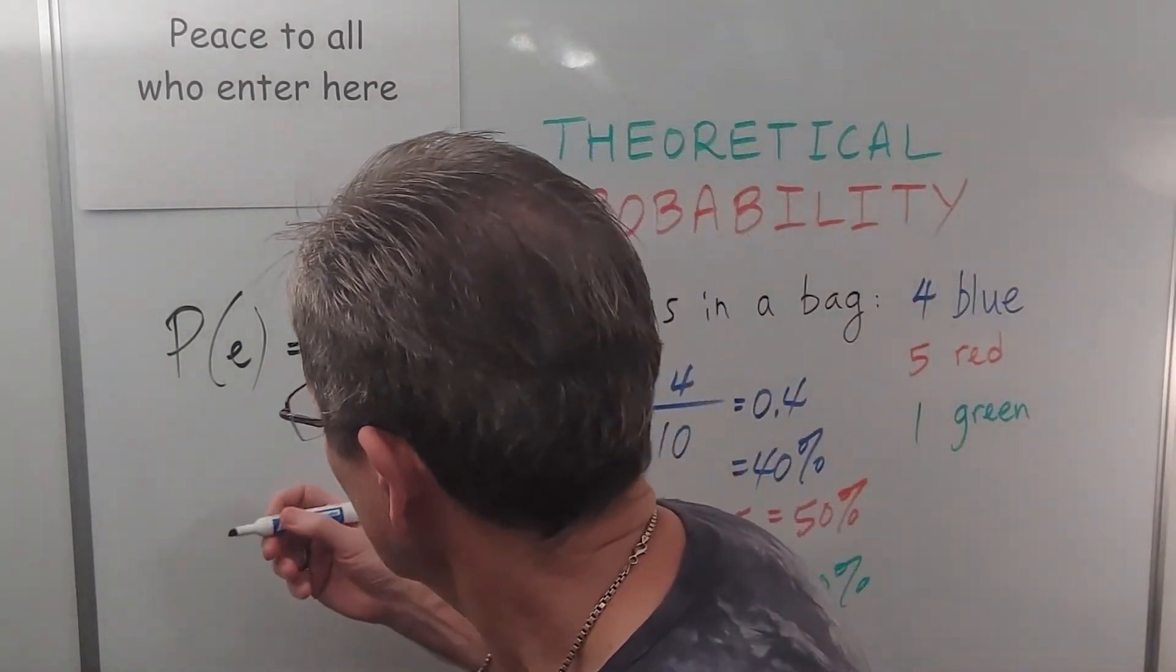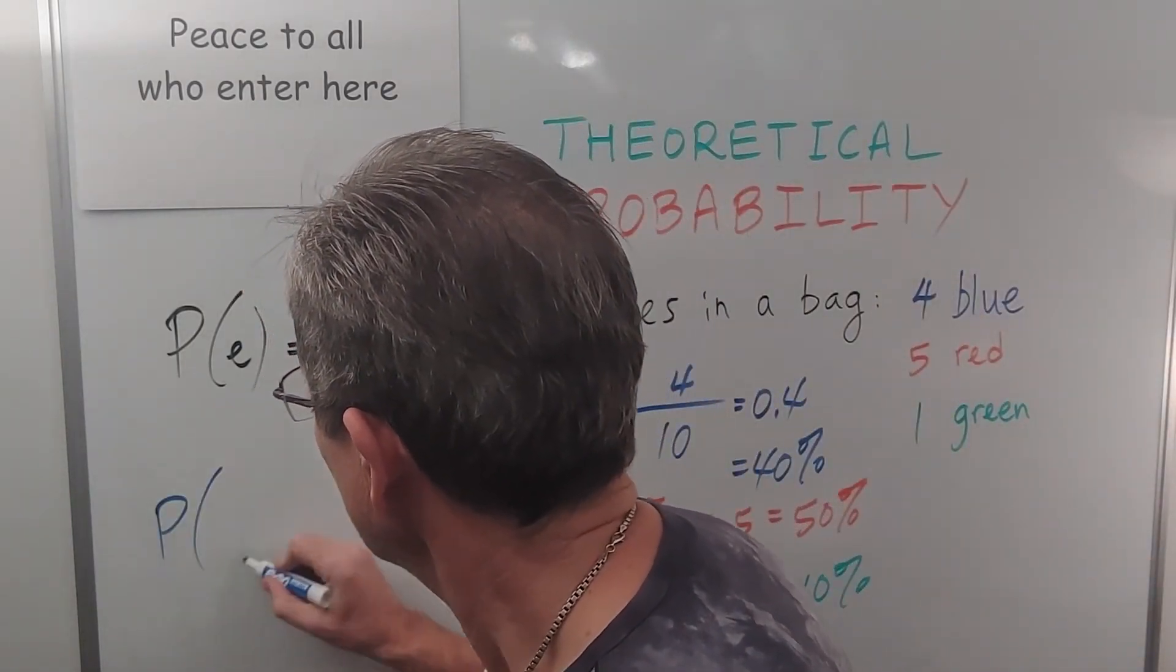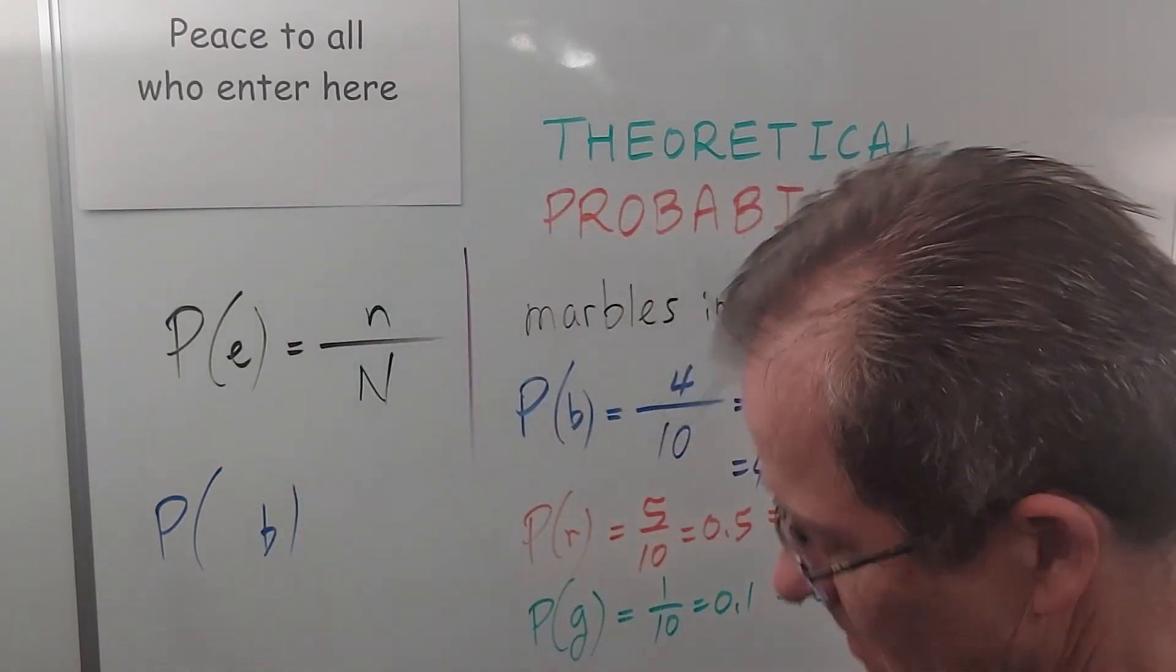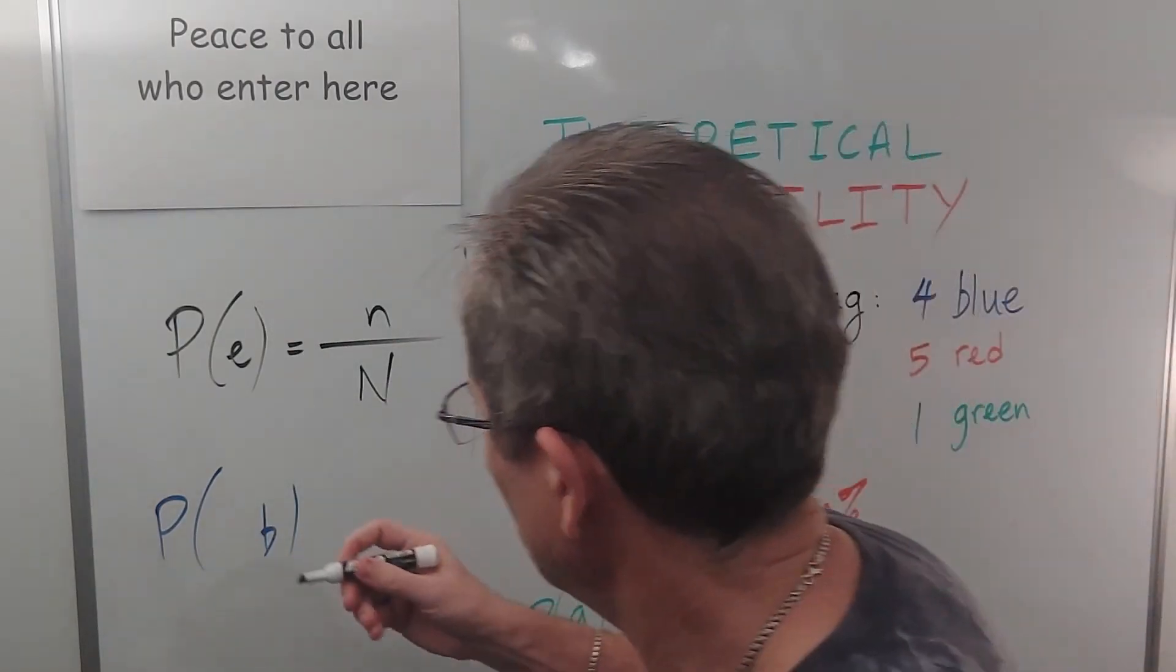What about the probability of not blue? Let's do that over here. Probability not blue.